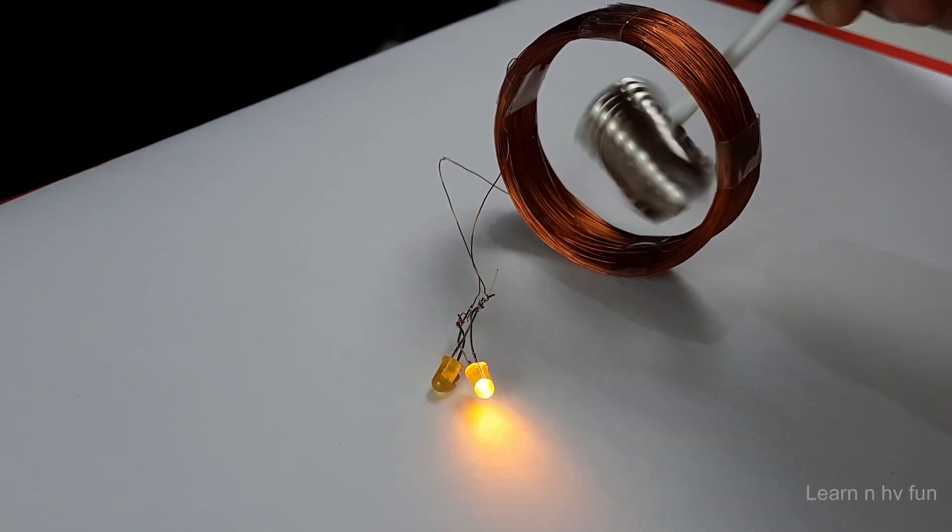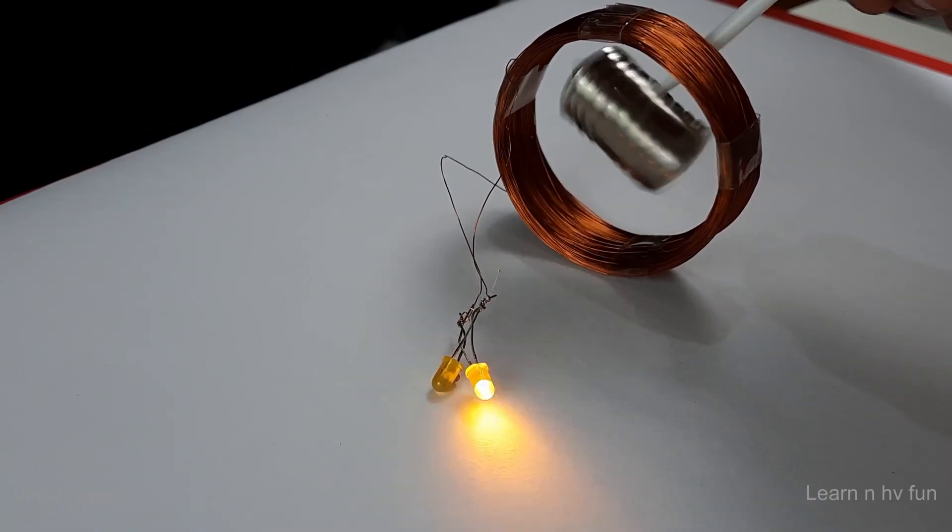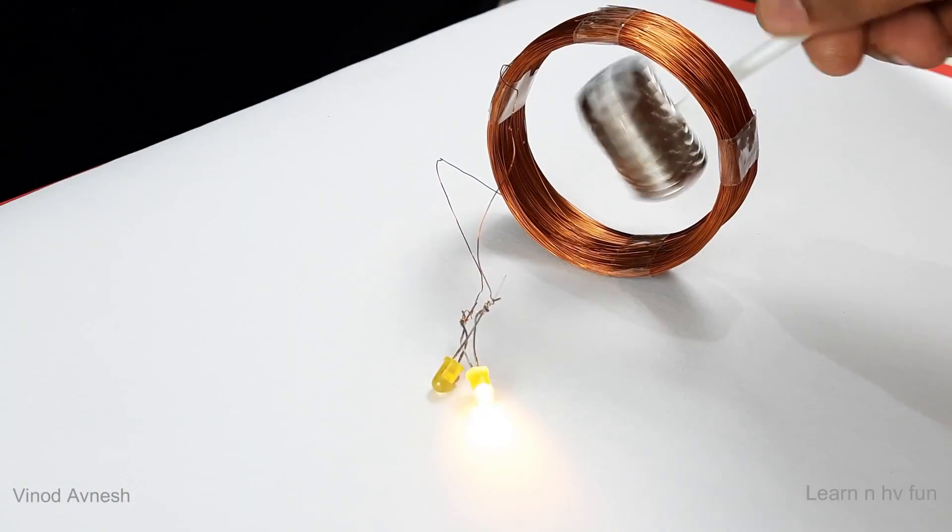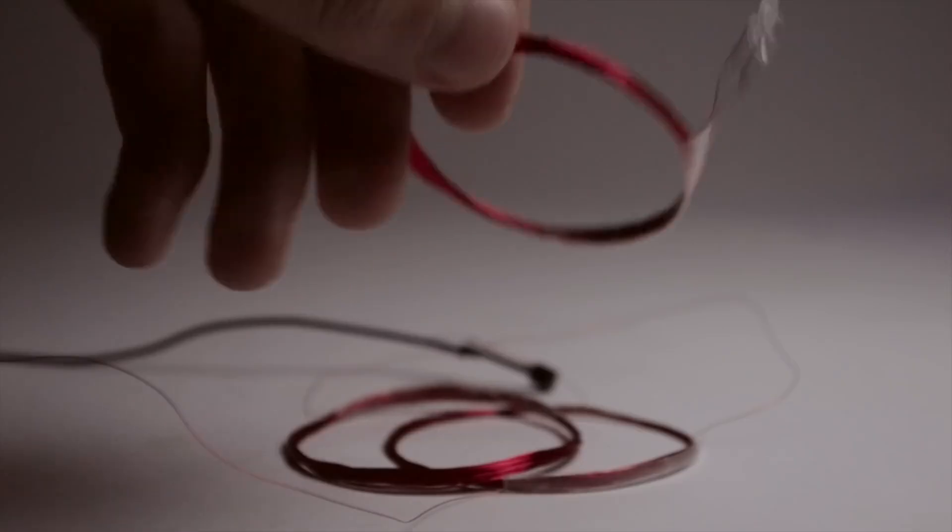In addition, we know that a changing magnetic field produces a vortex electric field. This is Faraday's law of induction. So by analogy with how we linked cause and effect in the case of electric current and magnetic field, we can write that the curl of the electric field is proportional to the change of the magnetic field. Or more precisely, in accordance with Lenz's rule, which is also an experimental fact, it is proportional with a minus sign.